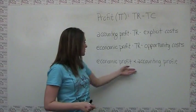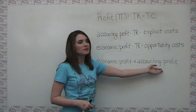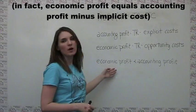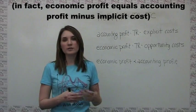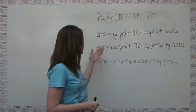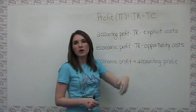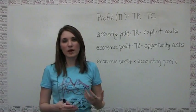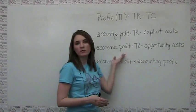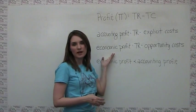For this reason, we can see that economic profit is less than accounting profit, because economic profit takes into account a wider definition of costs. And just like we said before, in economics, whenever we're talking about costs, you can assume we mean opportunity costs. Whenever we're talking about profit, you can safely assume we're talking about economic profit.